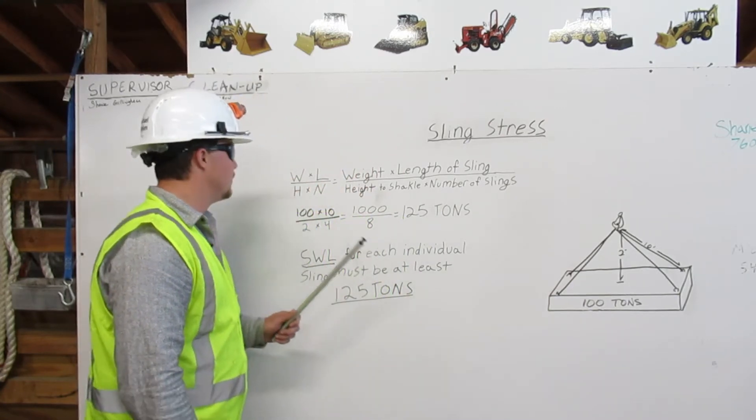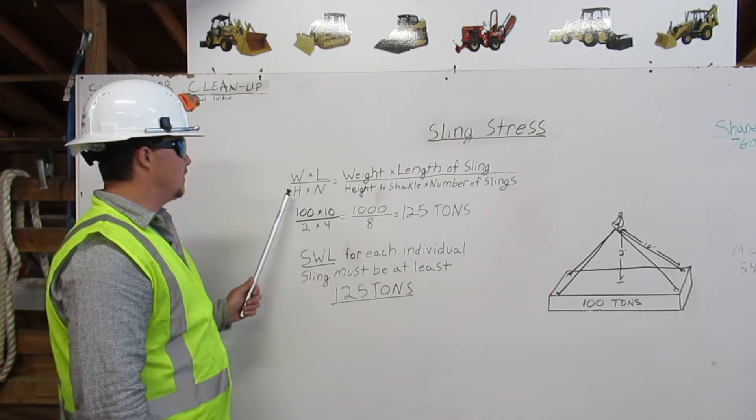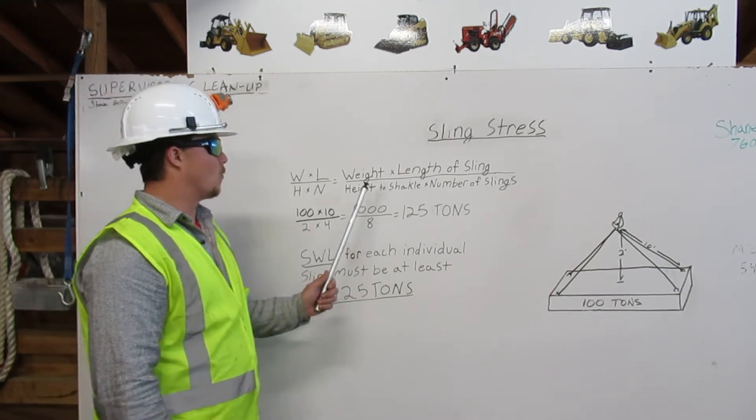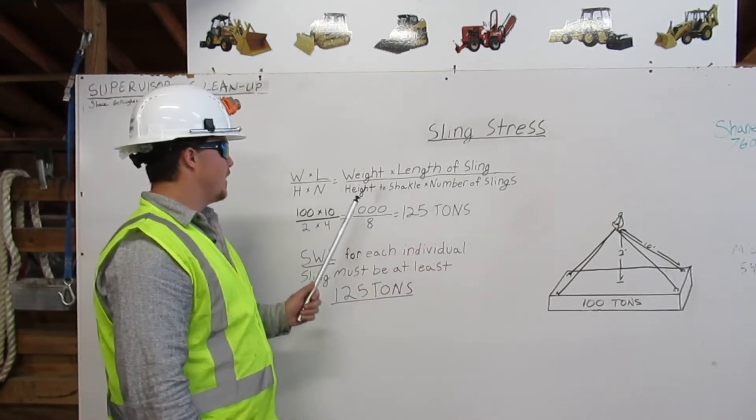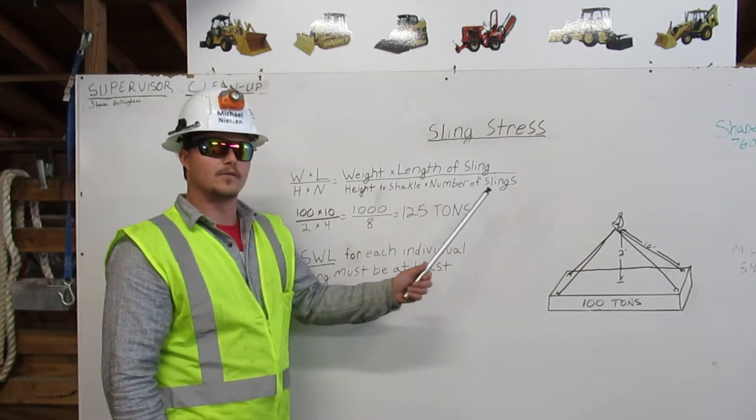We have an equation which is W times L over H times N: our weight times length of sling over our height to shackle times number of slings.